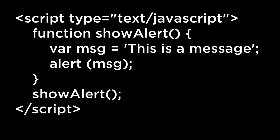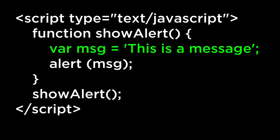JavaScript can look like the following. As you can see, the script starts with a script tag. Then a function called showAlert is defined. Within this function, a variable named msg is declared. This variable is passed to a function named alert. Then the function ends. Finally, the function showAlert is called.